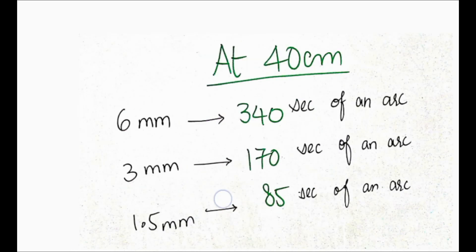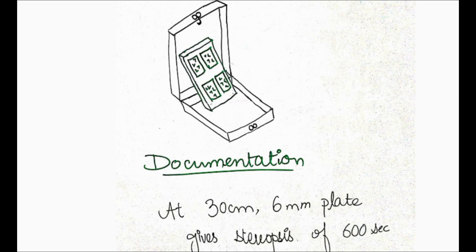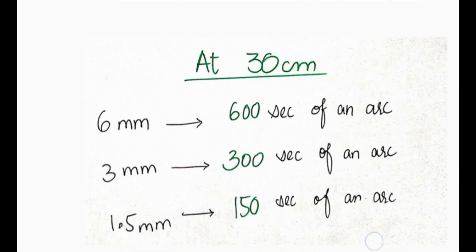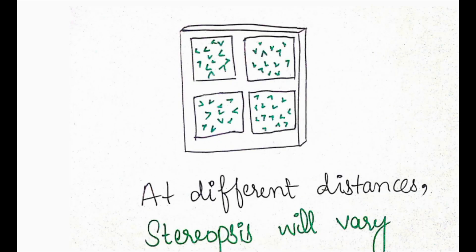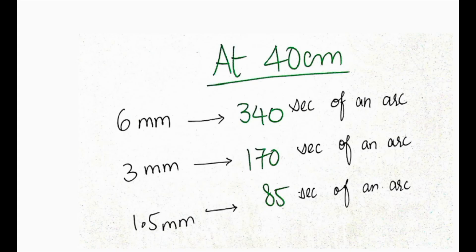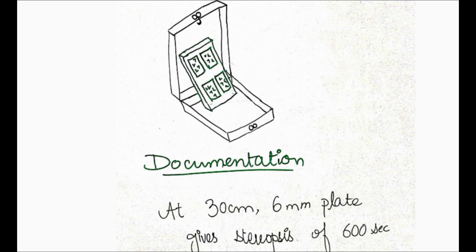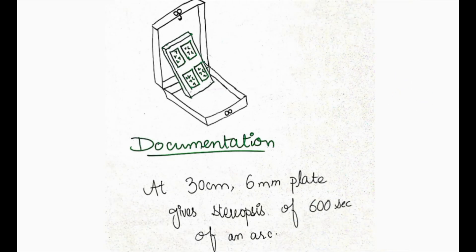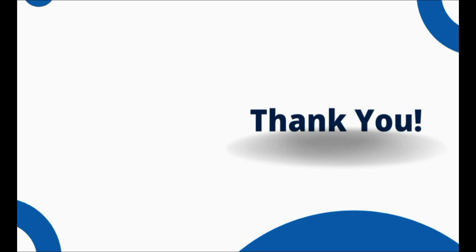For documentation, suppose the patient identifies only the 6 mm plate and cannot identify the 3 mm or 1.5 mm plates. At 30 cm, you document that the patient has a stereopsis of 600 seconds of arc. This is all about the Frisbee test. In case of any query or confusion, comment in the comment section. Thank you.